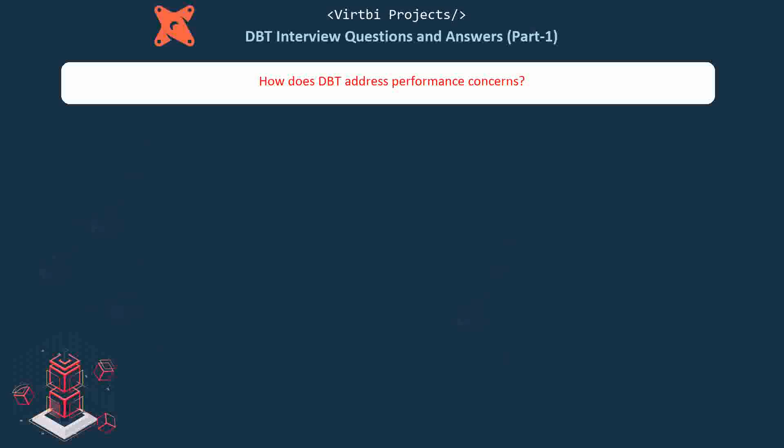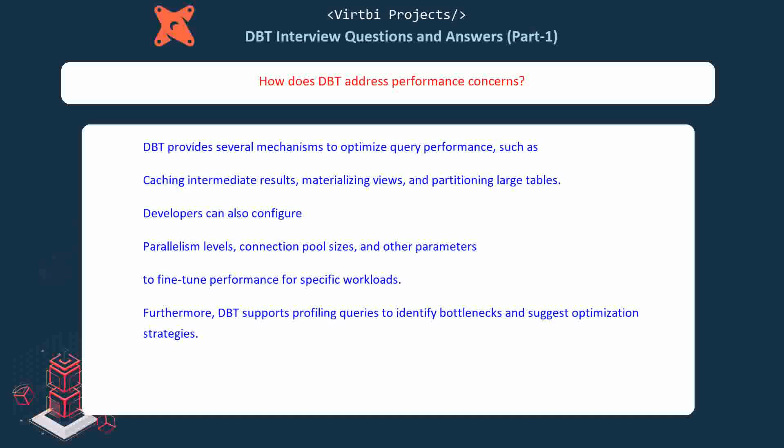How does dbt address performance concerns? dbt provides several mechanisms to optimize query performance, such as caching intermediate results, materializing views, and partitioning large tables. Developers can also configure parallelism levels, connection pool sizes, and other parameters to fine-tune performance for specific workloads. Furthermore, dbt supports profiling queries to identify bottlenecks and suggest optimization strategies.